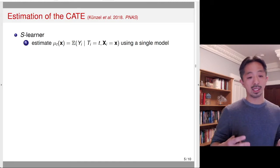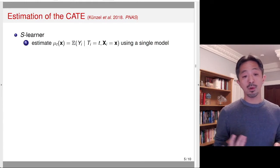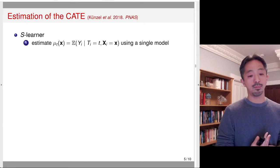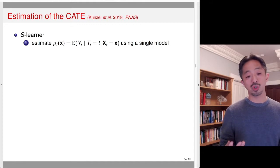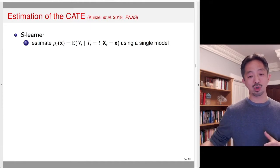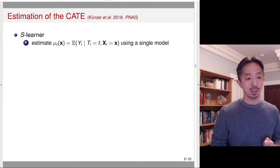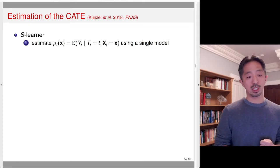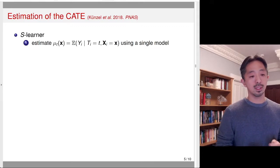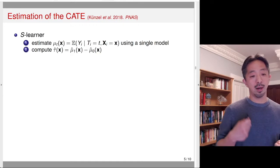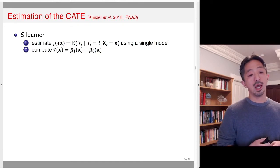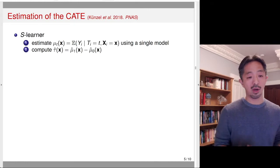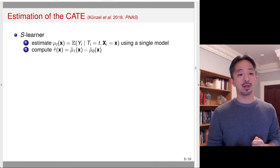I'm assuming that treatment is ignorable conditional on x here. In a randomized experiment, that's readily applicable. In observational studies, you have to assume that x includes all confounding variables. The S-Learner uses a single model to estimate this conditional expectation function. Once you have that, you plug in t equals 1 and t equals 0, then compute the difference between the two at each value of x.